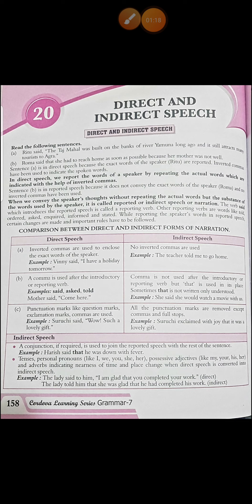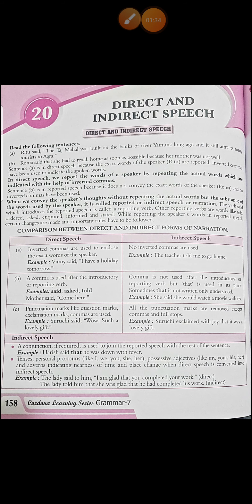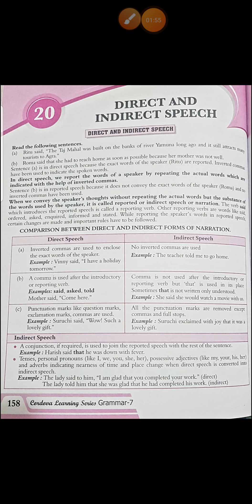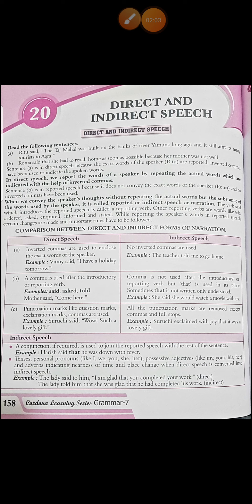In direct speech, we report the words of a speaker by repeating the actual words, which are indicated with the help of inverted commas — whatever is the exact words of the speaker, as seen in example A. The second type is when we convey the speaker's thought without repeating the actual words, but convey the substance of what the speaker said. That is your indirect speech, or narration, or reported speech.